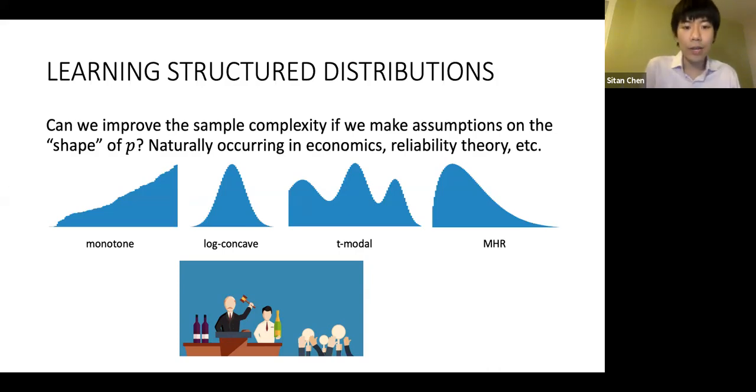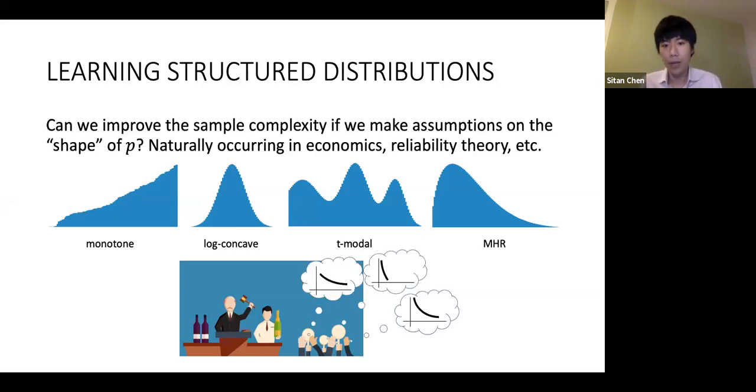Slightly different from the crowdsourced learning setting I was talking about earlier, imagine now that you're some kind of auction designer and you would like to estimate the demand curve of your bidders. There might be some small but constant fraction of your bidders who are trying to skew the outcome of your auction by giving you spurious bids, and you would like to design a mechanism which is robust to these kinds of corruptions.